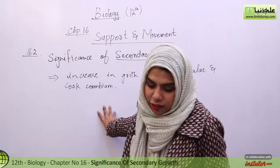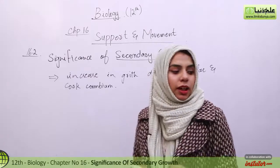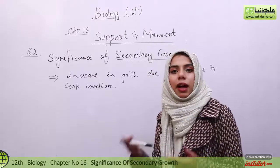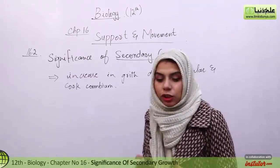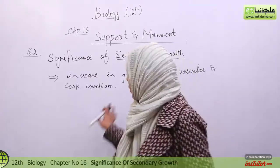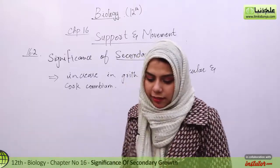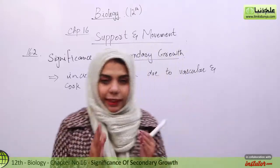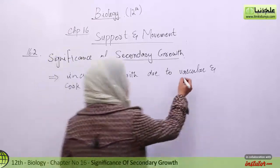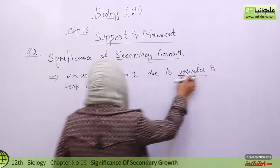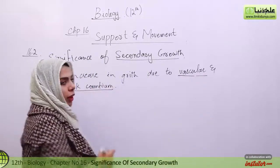Secondary growth is very important for plants, especially if you talk about adult plants like trees and shrubs. Now in secondary growth there are two main things: one is vascular cambium, the other one is cork cambium.